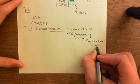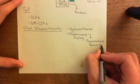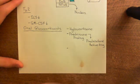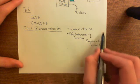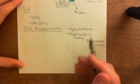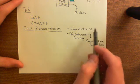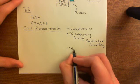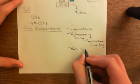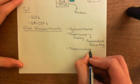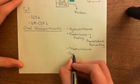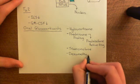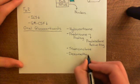So prednisone is the prodrug which is actually administered, whereas prednisolone is the active drug which is actually going to have the effect within the body. Now these two are quite short-acting glucocorticoids — they have to be regularly retaken. There are a few longer-acting ones: triamcinolone is sort of medium length, and then finally the longest one is dexamethasone.